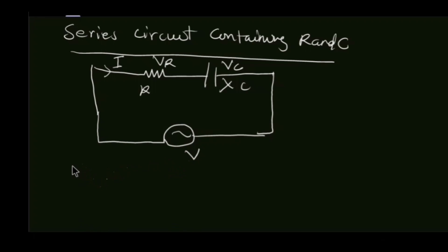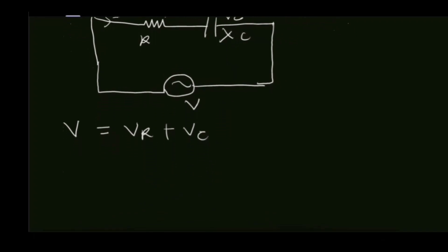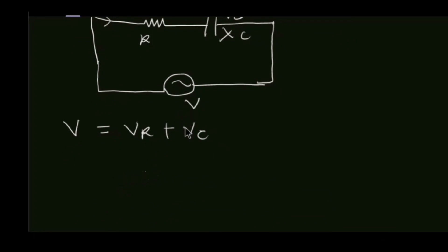By Kirchhoff's voltage law, our total voltage V is simply equal to the voltage drop across the resistor plus the voltage drop across the capacitor. So let's draw the phasor diagram for our RC circuit.